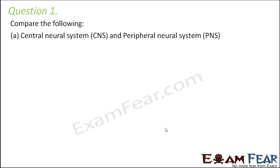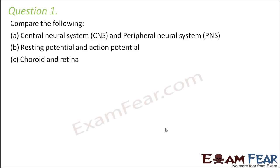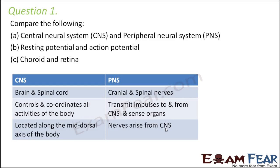Compare the following: central nervous system and the peripheral neural system; resting potential and action potential; choroid and retina. So let us start with the central nervous system and the peripheral nervous system. Central nervous system is composed of brain and spinal cord, whereas peripheral nervous system is made up of all the nerves which connect the central nervous system to different parts of the body.